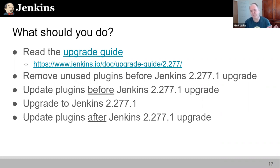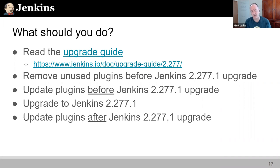If you realize you're not using a plugin, this upgrade is a great time to remove it from your installation. Even before you upgrade to Jenkins 2.277.1, upgrade your plugins. Because of the breaking changes inside 2.277.1, it's important that you upgrade plugins first. Many plugins can be upgraded without upgrading to 2.277.1. Then do the upgrade to 2.277.1, and afterwards do another plugin update - some plugins are not available for 2.263 and require 2.277. So remember: two plugin updates are needed.